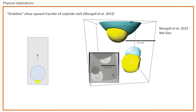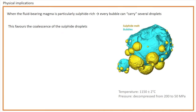The first physical implication of drobbles, identified by Mangal and co-authors, is that they can transport the sulfide melts upward through the magma, if the total density of the compound drops is lower than that of the silicate melt. When the fluid-bearing magma is sulfide rich, every bubble can carry several droplets of sulfide melt, as we see in this micro-CT image of a decompressed sample. This favors the coalescence of the sulfide droplets attached to the same bubble, because their interfacial tension is lowered by the presence of the bubble.